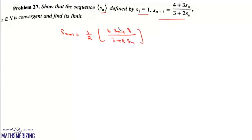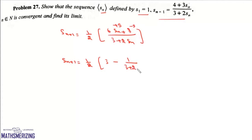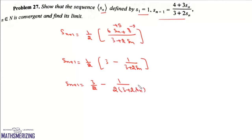We rewrite Sₙ₊₁ as (1/2) · (6Sₙ + 8) / (3 + 2Sₙ). Adding and subtracting 9, we take 3 as a common factor, giving Sₙ₊₁ = (1/2) · [3 − 1/(3 + 2Sₙ)], which simplifies to Sₙ₊₁ = 3/2 − 1/(2(3 + 2Sₙ)).